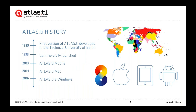Where does Atlas TI come from? The first version was developed at the Technical University of Berlin in 1989, and our headquarters today is still in Berlin, but we also have offices and users all around the world. Atlas TI has been on the commercial market for well over 20 years. Today we have Atlas TI for Windows and Mac. If you have a tablet, you can find a free Atlas TI app on our website for Android or iPad and continue analyzing your data on the go.